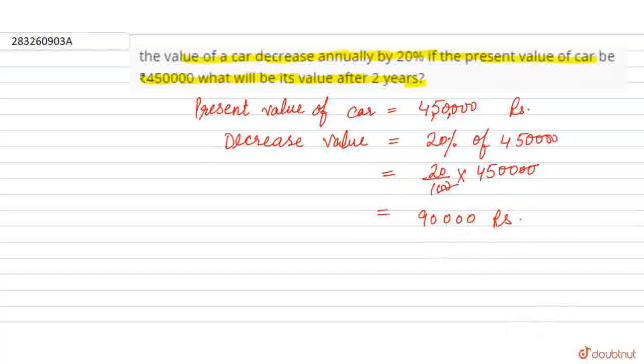Now after the 1st year, the value of car is equal to 450,000 minus 90,000, which equals 360,000. This is 360,000 after 1 year.